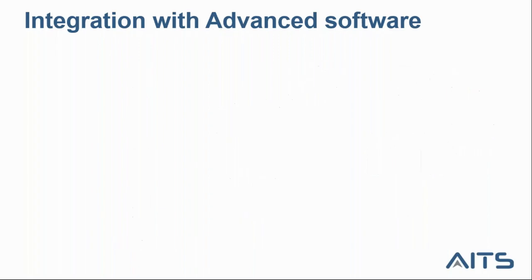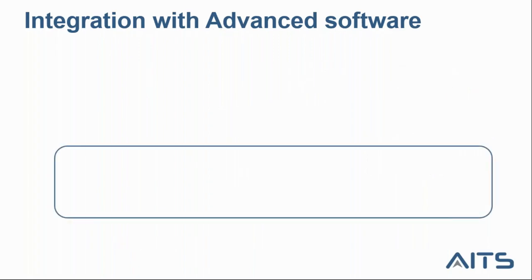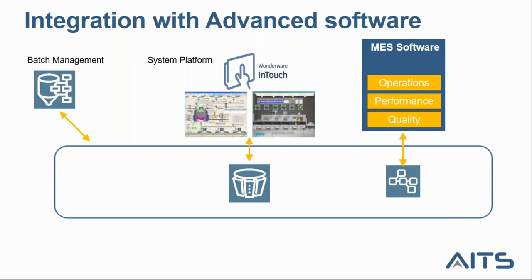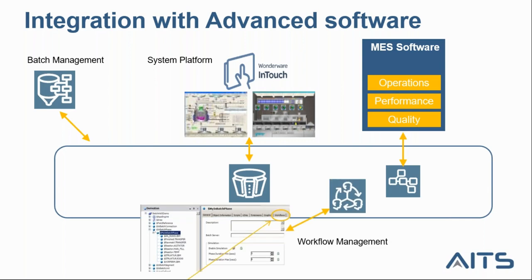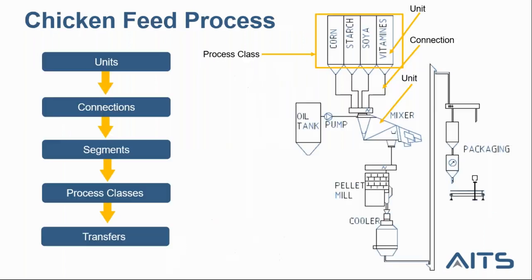It's important to mention that Aviva Batch Management can be integrated easily with advanced softwares such as System Platform, MES, and workflow management. In our demo today, we will show a general example about the chicken feed production process. In order to produce the chicken feed, we need four raw materials.